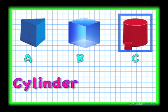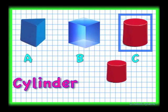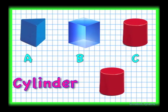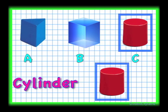Well, you are right. Shape C is a cylinder. The color of the cylinder is red. Good job.